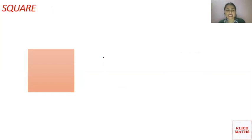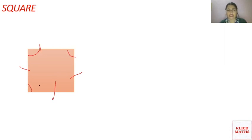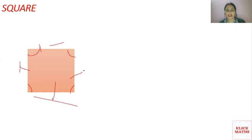The next shape is a square. A square has four sides, but all the sides of a square are equal. Like a rectangle, it also has four angles of 90 degrees. In a rectangle, opposite sides are equal, but in a square, all four sides are equal.